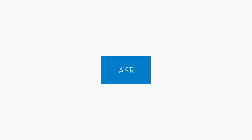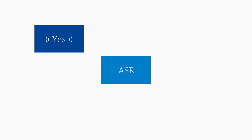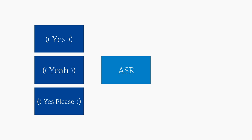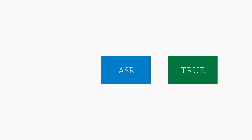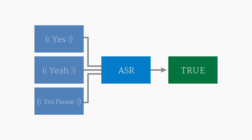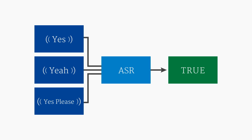It is also possible to transform the output into text that is more meaningful for computer applications. For instance, the phrases "yes," "yeah," and "yes please" might all return the word "true." This process of transforming the output is called semantic interpretation, which is the subject of other videos available at developer.lumenvox.com.